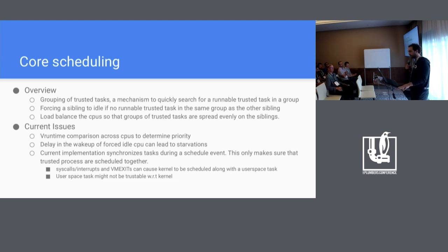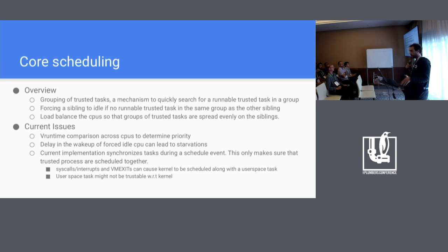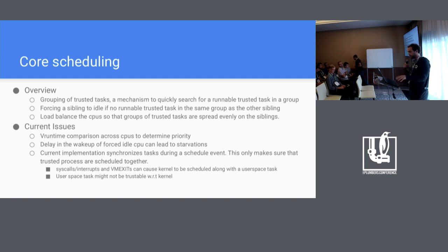The main idea is grouping trusted tasks and finding quickly trusted tasks to run on the same core. If we don't find two tasks that can run at the same time on the same core, we force idle on the other sibling. We also want to load balance between CPUs to pull tasks that are compatible and run on the same core instead of being spread and having to force idle a lot of time.